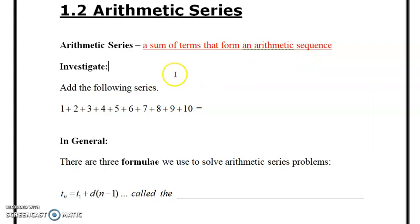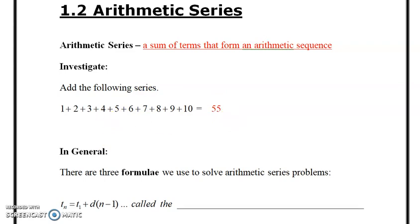Let's look at the investigation. We're going to add the following series together. So we're going to add these numbers all up, and when we add them all up we get 55. We're going to determine an equation that's going to allow us to do that. You may see some patterns here. If you look at the first term and the last term, when we add those together we get 11. If you look at the second last term and the second term, add those together we get 11. So we see little patterns are happening here.